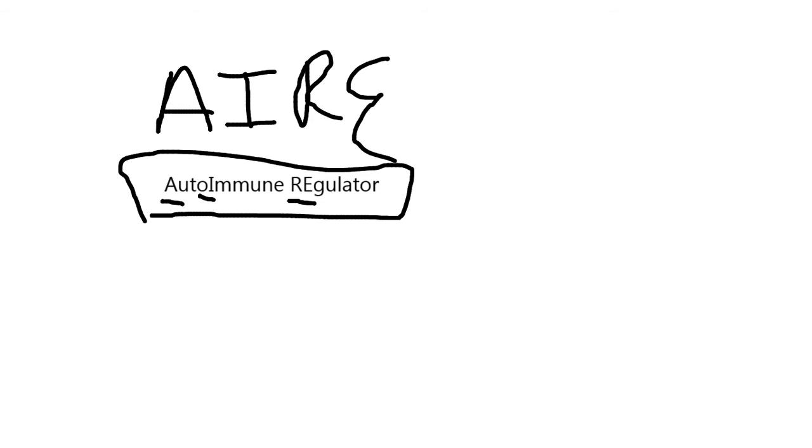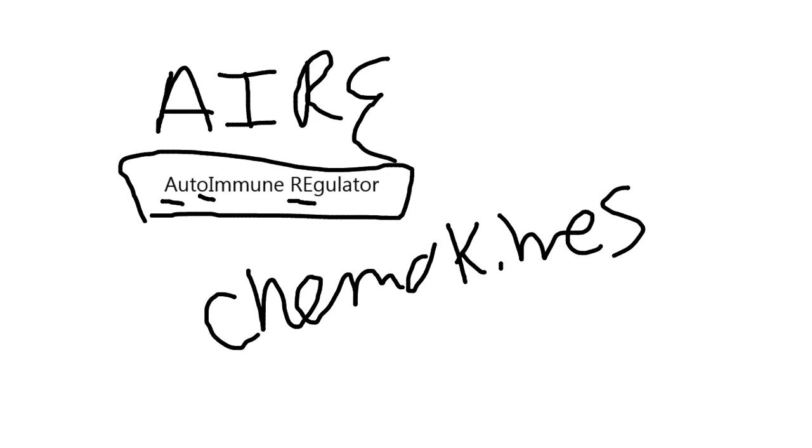All of this movement around the thymus, it's regulated by chemokines. And so at each stage of the T cell development, it starts producing different receptors. And those different receptors tell it where in the thymus to go. And the various areas of the thymus are secreting different kinds of chemokines.